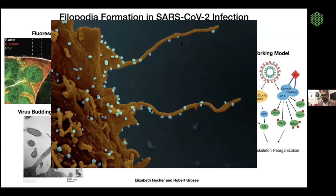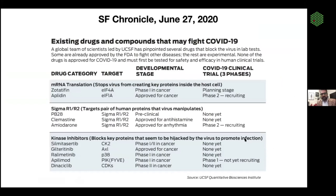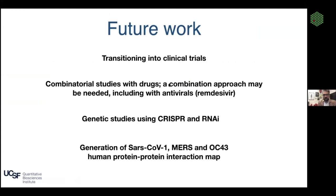We've narrowed in on about 10 drugs — three of these are already in clinical trials and we're monitoring them closely. We're partnering with other entities to get some that aren't yet in clinical trials into clinical trials, including zotatifin. Future work includes transitioning these into clinical trials, doing combinatorial studies with remdesivir — I personally think you'll need a cocktail approach just like we had for HIV — and doing genetic validation with CRISPR and RNAi for the proteins identified in the proteomic studies.